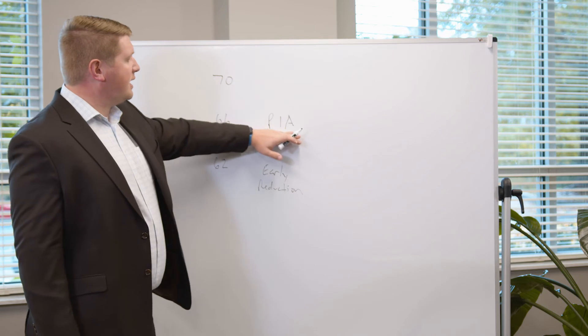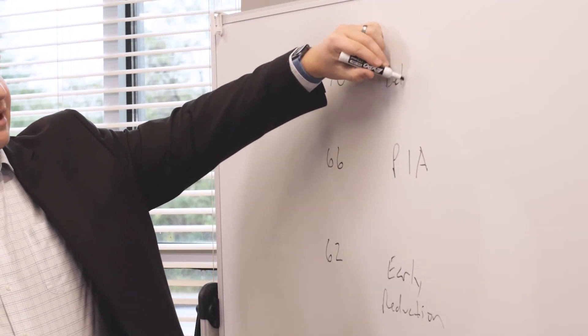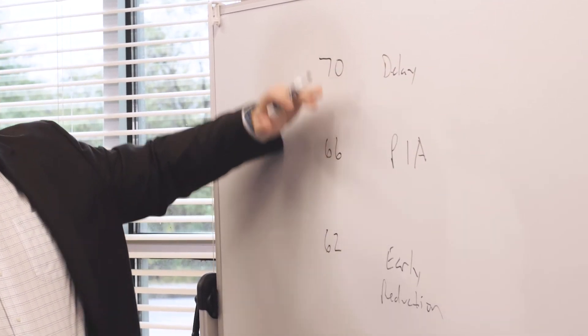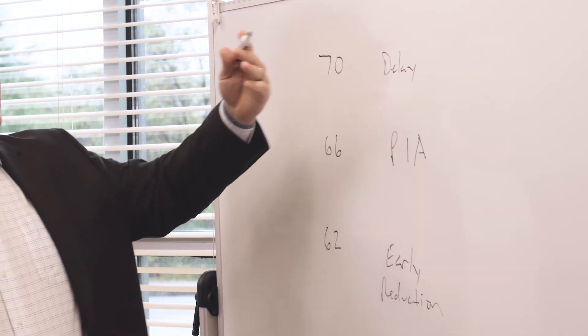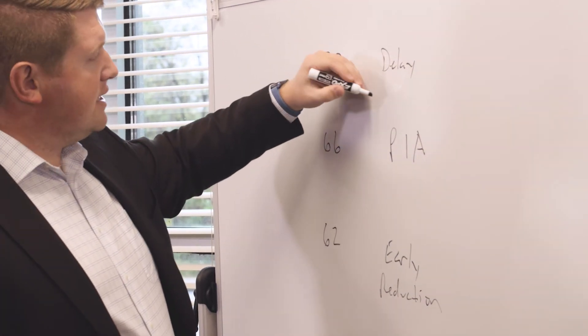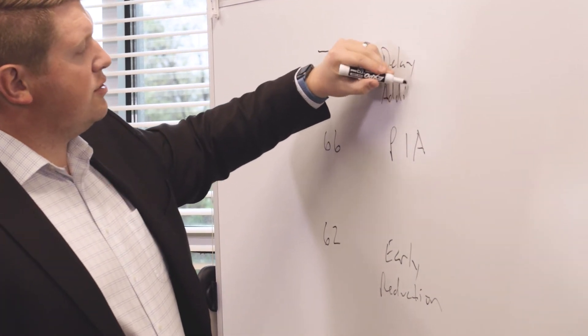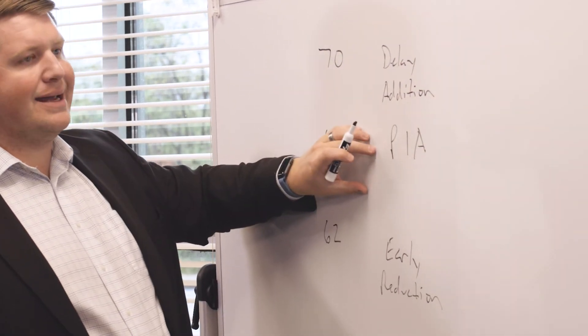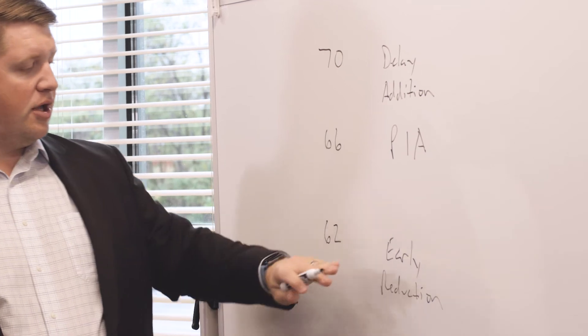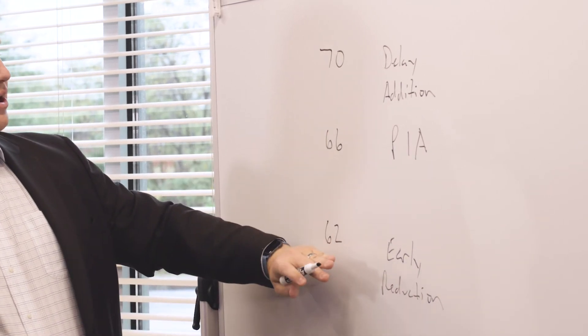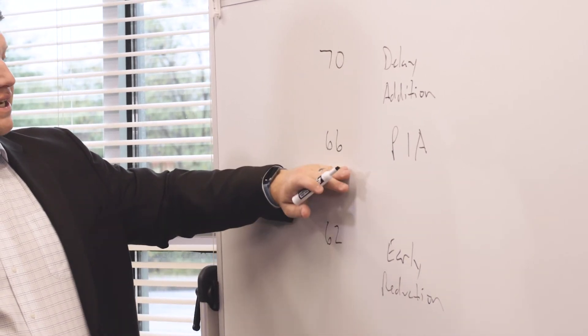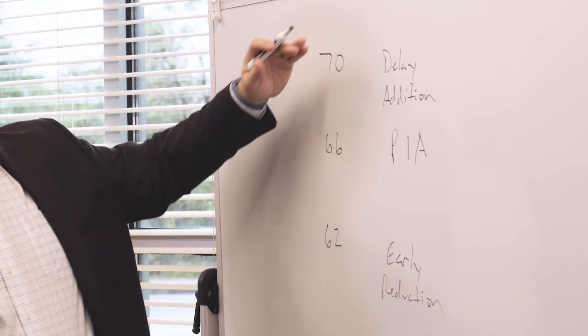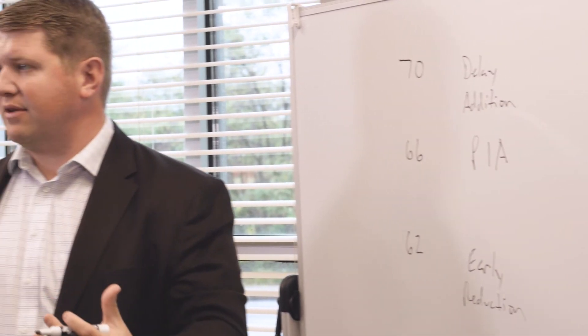If you choose to delay, filing after age 66 up to 70, you get an addition of about 8% of that PIA amount each year. You get about six and two-thirds percentage point increase from 62 to 66, and then an 8% increase from 66 to age 70.